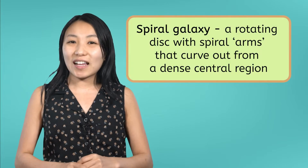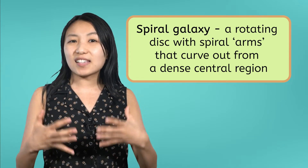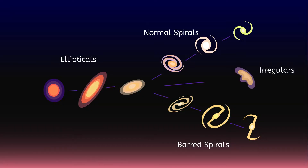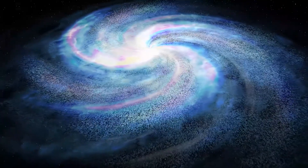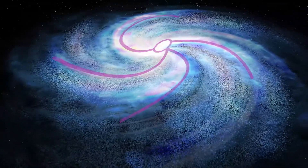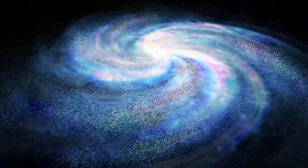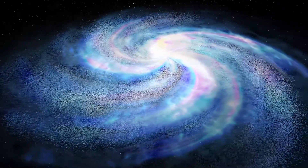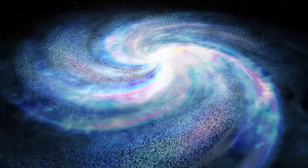Spiral galaxies are classified as a rotating disk with spiral arms that curve out from a dense central region. There are two subcategories: the normal spiral and the barred spiral. Normal spiral galaxies are classified by their central mass of stars surrounded by a disk with spiral arms extending out from the center. Since many stars are clustered around the center, the middle is very bright. The long, curving arms are made up of more stars, gas, and dust — and these arms are where new stars within the galaxy are born.